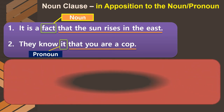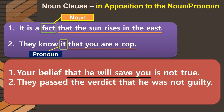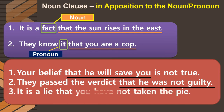Examples of noun clauses in apposition: First, 'Your belief that he will save you is not true' — 'that he will save you' expands the noun 'belief,' so it is in apposition to the noun 'belief.' Second, 'They passed the verdict that he was not guilty' — 'that he was not guilty' is in apposition to the noun 'verdict.' Third, 'It is a lie that you have not taken the pie' — 'that you have not taken the pie' is in apposition to the noun 'lie' in the main clause.